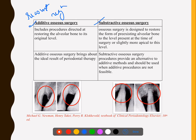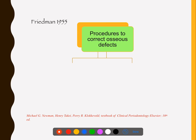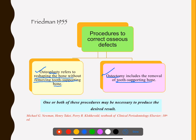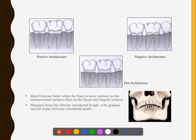According to Friedman, procedures to correct osseous defects include osteoplasty and osteectomy. Osteoplasty means reshaping the bone without removing the tooth-supporting bone, whereas osteectomy means you are removing the tooth-supporting bone. In both procedures, one or both may be necessary — sometimes only one is required, and sometimes you need to do both.